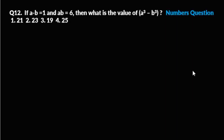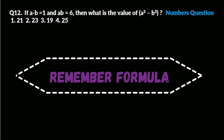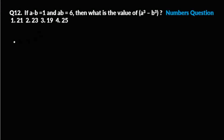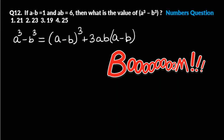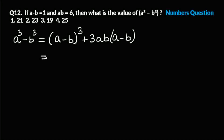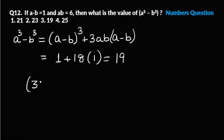Next question: if a minus b equals one and ab equals six, then what is the value of a cube minus b cube? This is a numbers question with four options. If you know the formula, it is very simple. The formula is: a³ minus b³ equals (a minus b)³ plus 3ab(a minus b). Substituting: one cubed is one, plus three times six times one equals eighteen, so the answer is nineteen — option number three. Very simple if you know the formula.